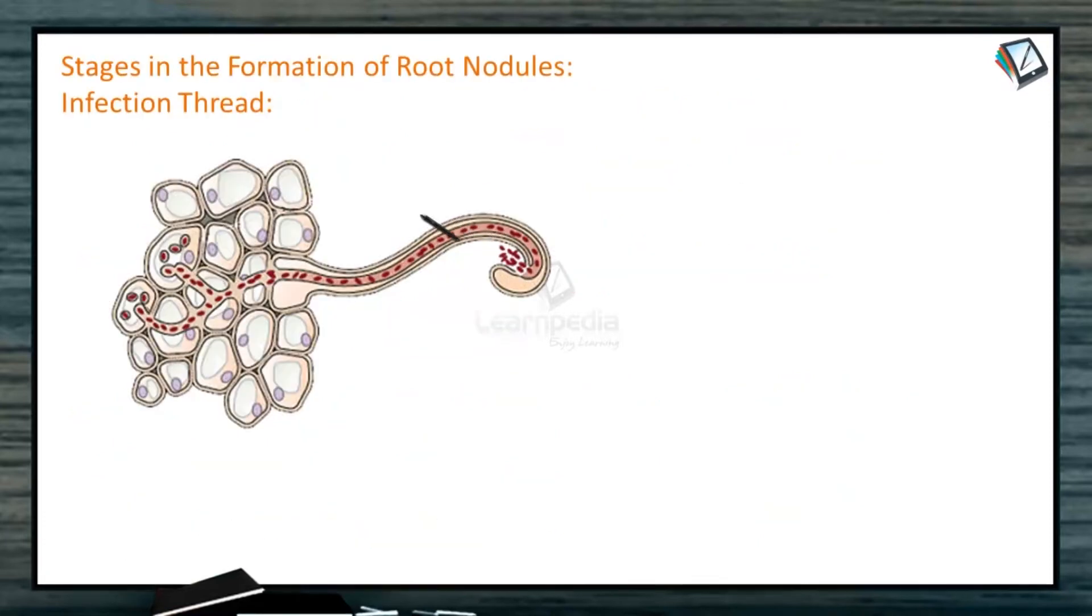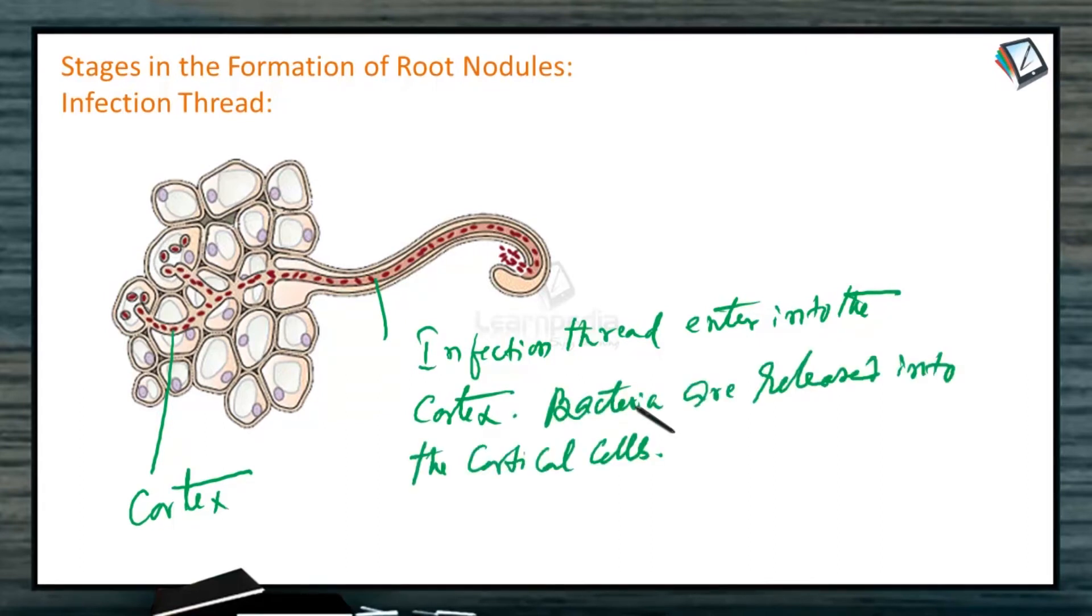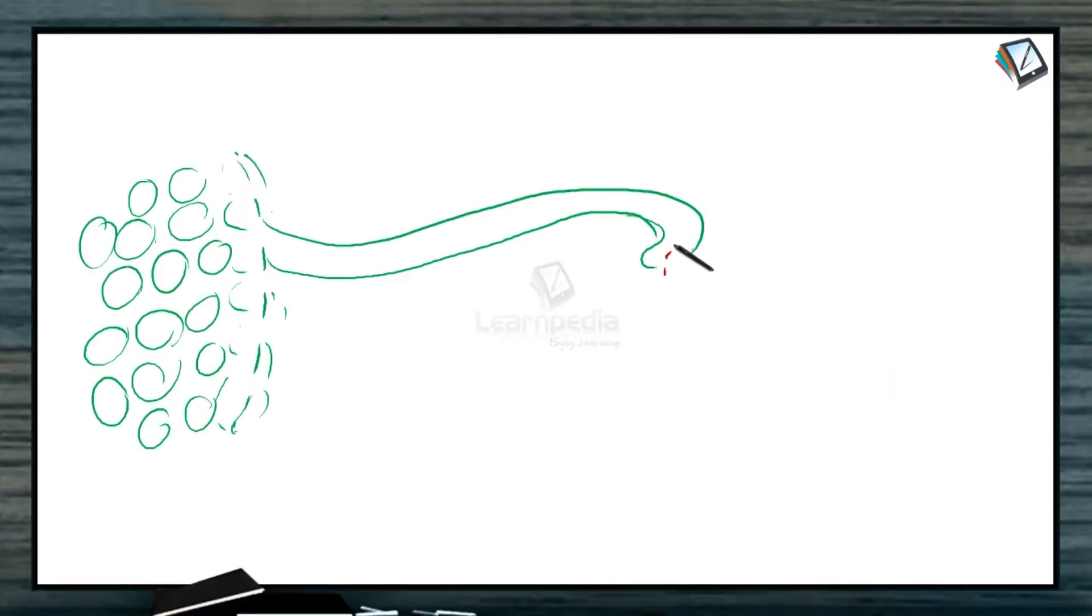Look at the image here. The infection thread enters into the cortex. This is the cortex and these bacteria are released into the cortical cells. Go to the next image. The bacteria which entered into the cortex through the root hair in the form of an infection thread.